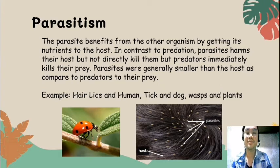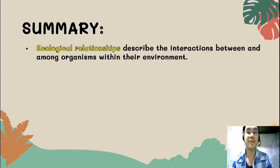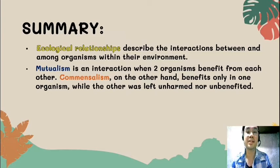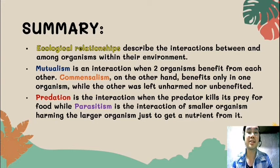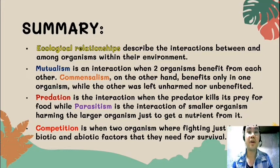For our summary: ecological relationships describe the interaction between and among organisms within their environment. Mutualism is when two organisms benefit from each other. Commensalism benefits only one organism, while the other is left unharmed and unbenefited. Predation is when the predator kills its prey for food, while parasitism involves smaller organisms harming a larger organism to get nutrients from it. And lastly, competition is when two organisms fight to get the biotic and abiotic factors they need for survival. That's the end of our lesson for today — thank you for listening.